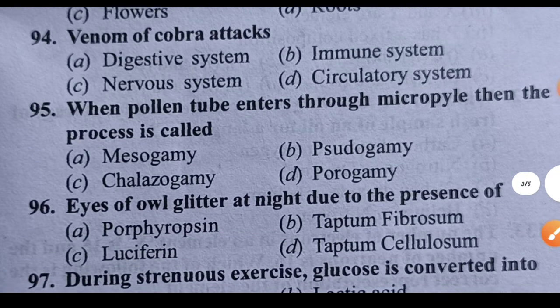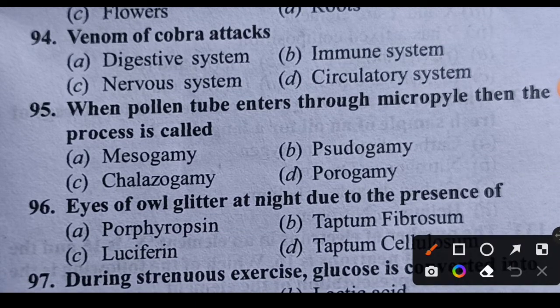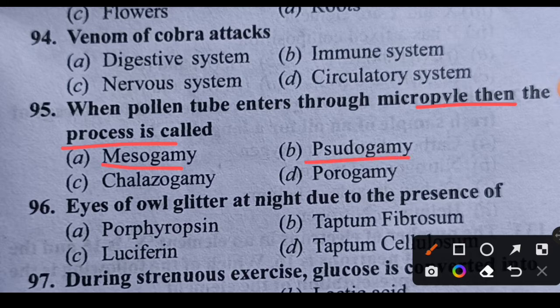Question 95: When a pollen tube enters through the micropyle, then the process is called what? Options: Mesogamy, Pseudogamy, Chalegamy, or Porogamy? When the pollen tube enters through the micropyle end, this process is called Porogamy. Option D is correct.